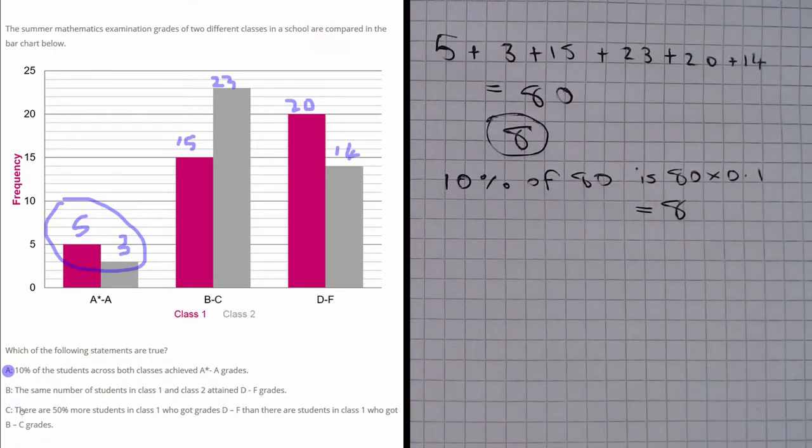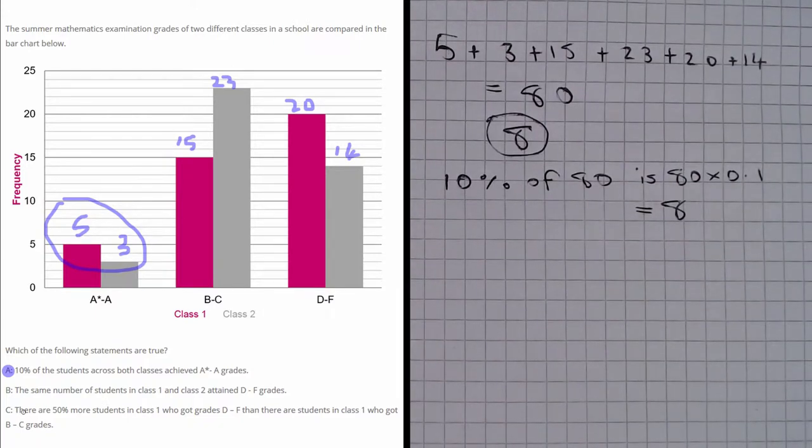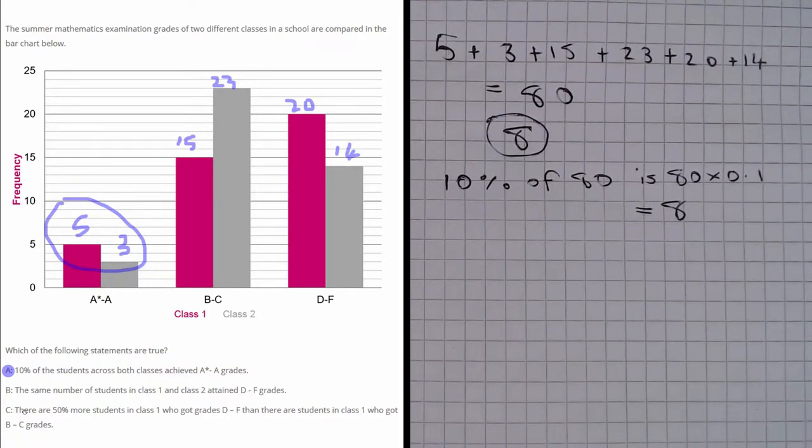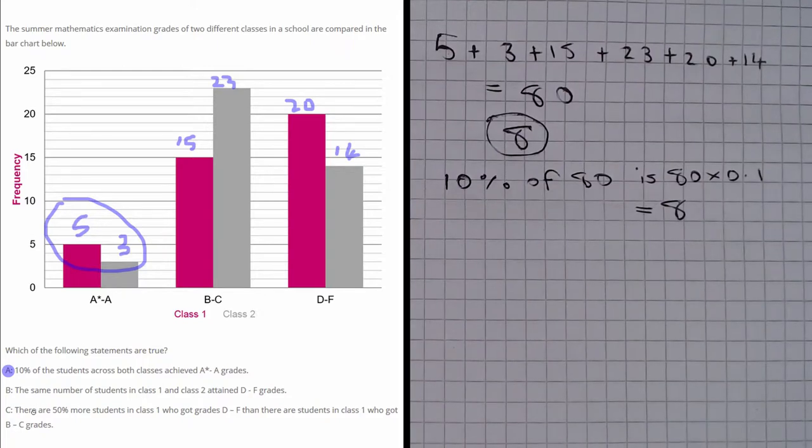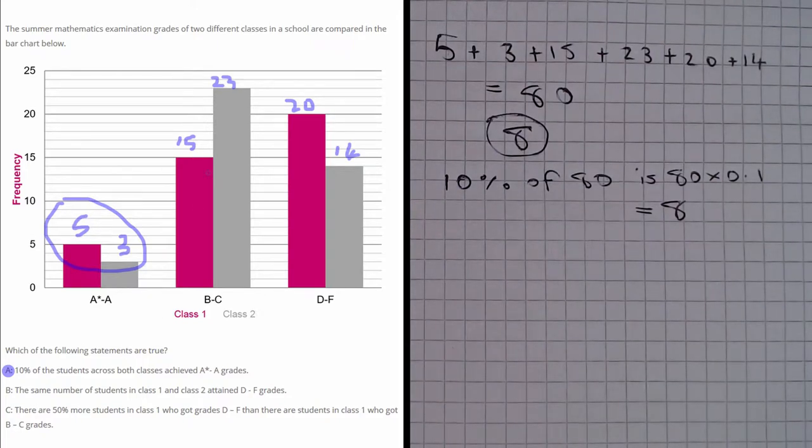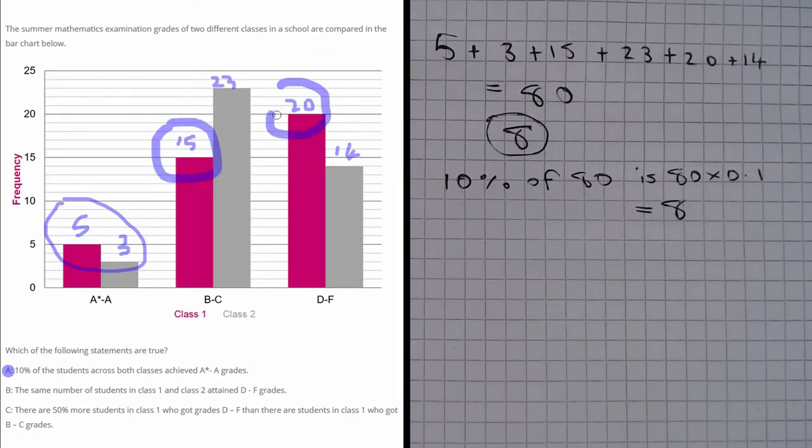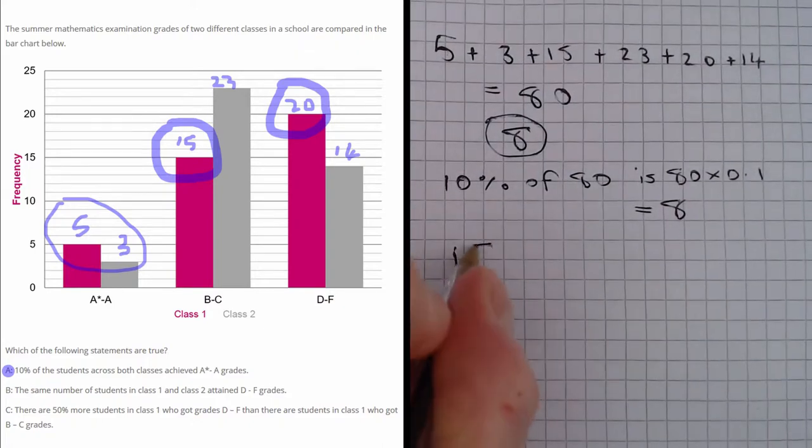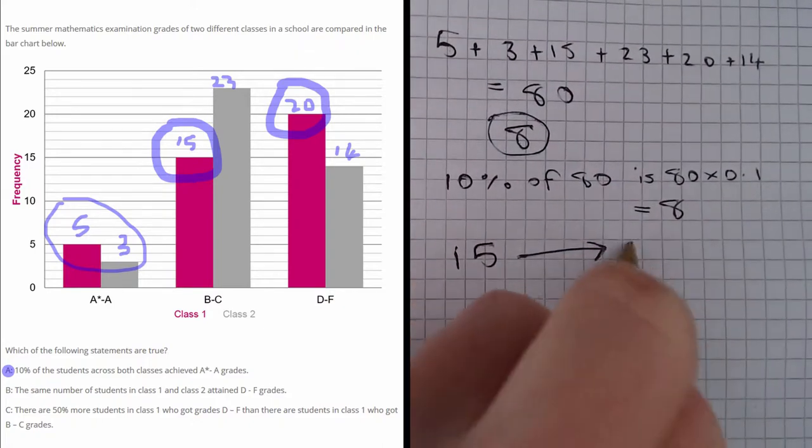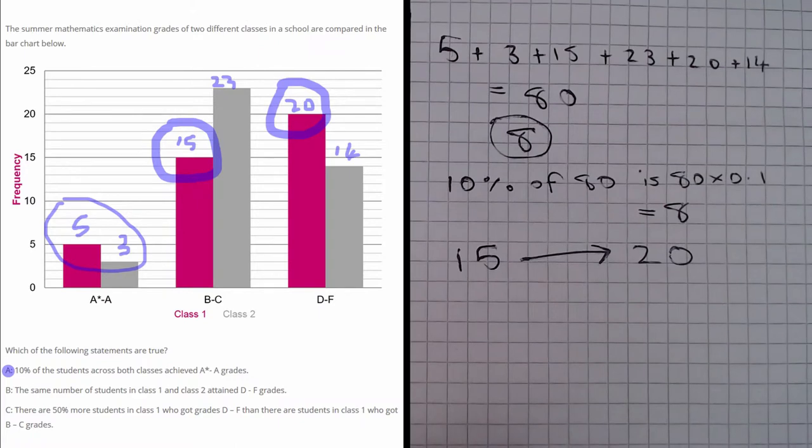Finally, let's have a look at part C. This says that there are 50% more students in class 1 who got grades D to F than there were students who got B to C grades. So if we look at class 1 we can see here that we have 15 people who got B to C and 20 people who got D to F. So we started with 15 and we've moved up to 20 and we need to know what that increase is.